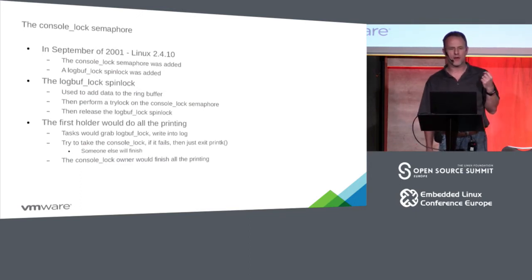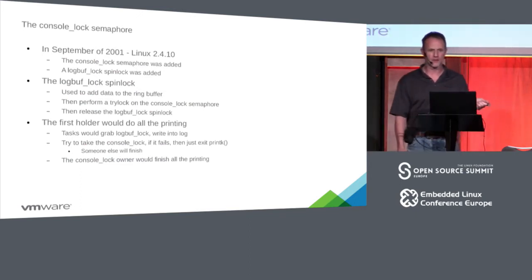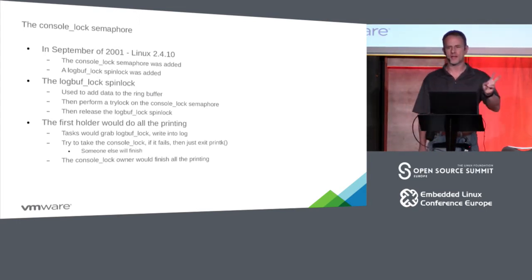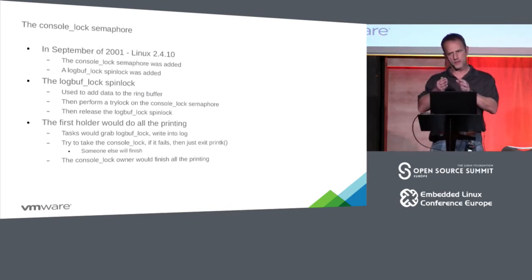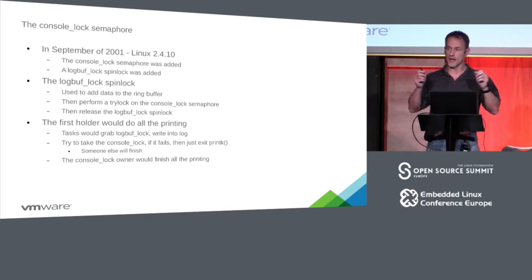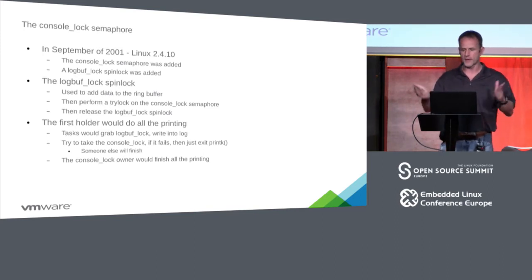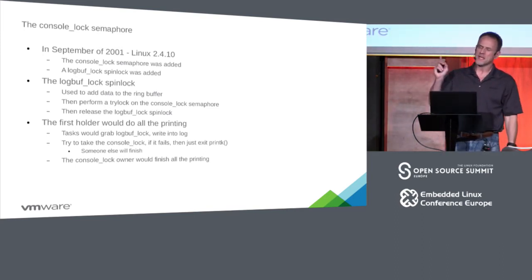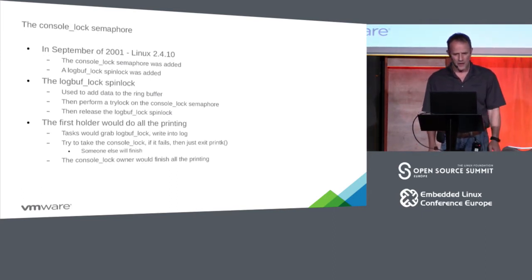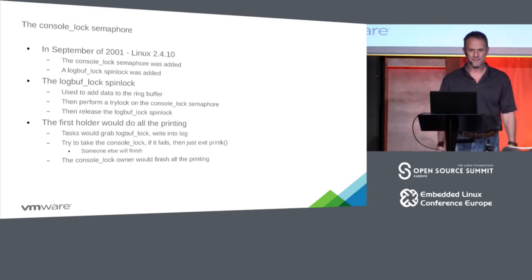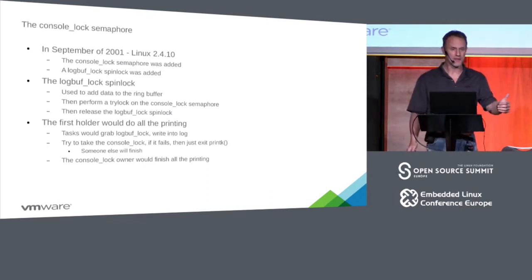So the console lock semaphore was introduced in 2001 in 2.4.10. We now have two locks: a log_buf_lock — a normal spin lock that protects the in-memory ring buffer — and the console lock, which works strangely. The first holder of the console lock does the printing. Everyone else just says thank you, goodbye — and the one with the console lock will do the printing for everyone.